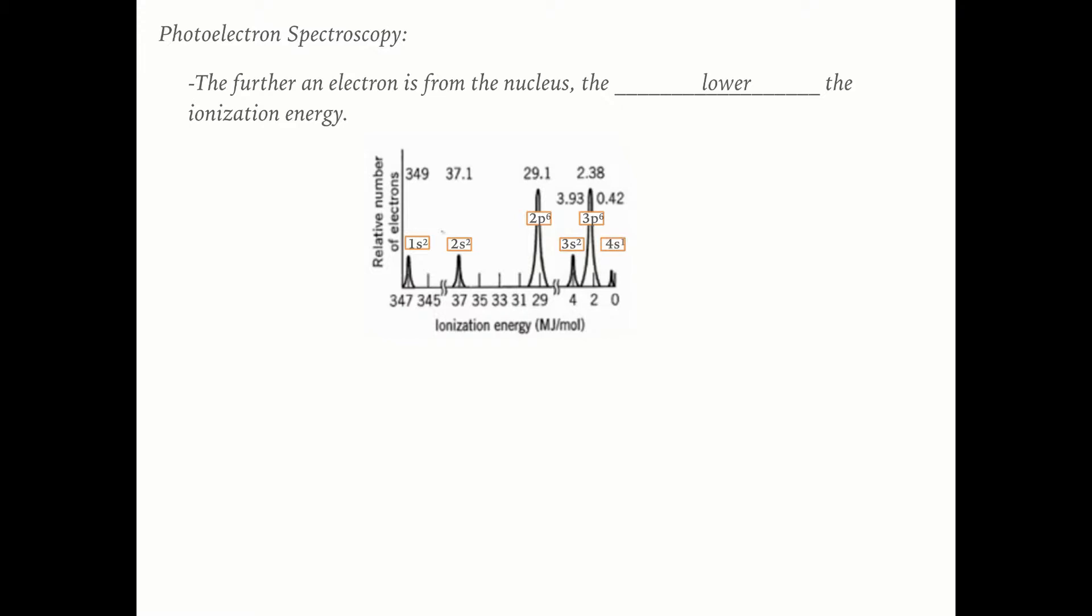Finally, the last peak is half as tall as the 3s2, which tells us it's gonna be 4s1. So that tells us that that is gonna be potassium. It's a really cool technique because it lines up perfectly, it's showing you each of the individual sub levels.